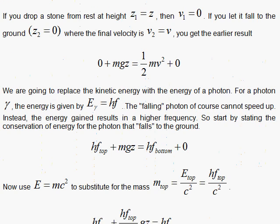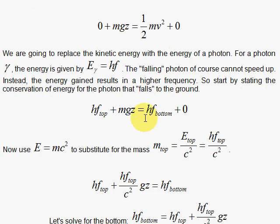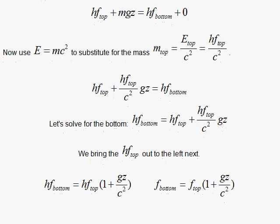So we simply put hf in for the energy. Then we use E equals mc squared to get rid of that mass, and you have here the mass at the top. So we will use the energy at the top divided by c squared. Here we don't have to worry about mass because there is no potential energy. So when we do that, we have this neat little formula: hf_top plus hf_top over c squared times gz equals hf_bottom. We solve for hf_bottom and factor out the hf_top, so you have 1 plus gz over c squared. If you divide by the h, you simply have this formula for the frequency.